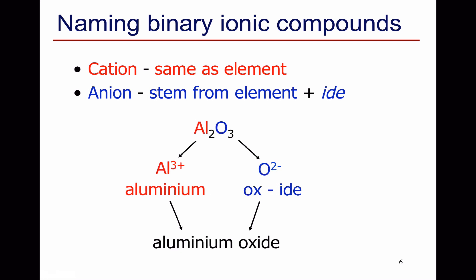Al2O3. The cation is aluminum, and the anion comes from oxygen. We take the ox and add "-ide" to get oxide. Aluminum oxide. Again, the formula is Al2O3, but the name is simply aluminum oxide.